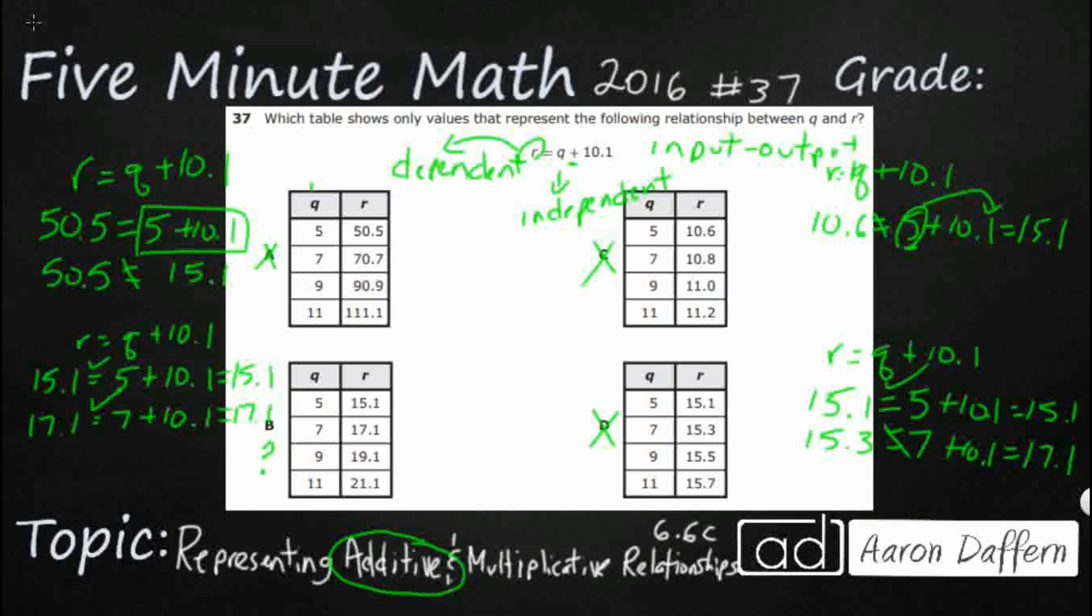We can do one more just to make sure this works over here. 19.1 equals 9 plus 10.1. Yep. That equals 19.1. Our answer is B.